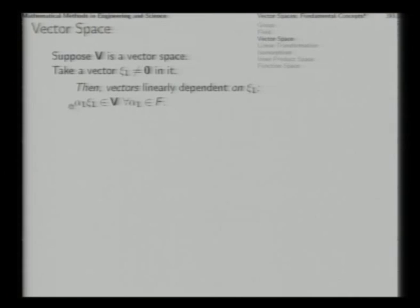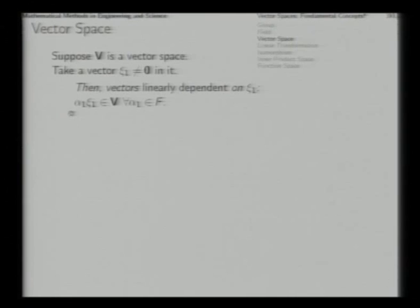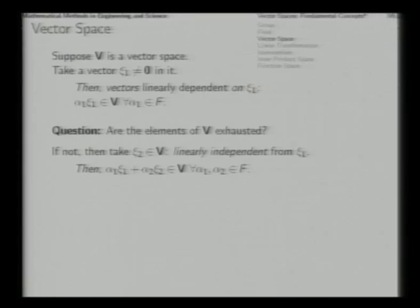With this vector ξ₁ picked from the vector space, we get a lot of scalar multiples: take a scalar α₁ and for all such α₁ from the underlying field F we can get several other vectors α₁·ξ₁. All such vectors are in V. These vectors which can be generated from ξ₁ through scalar multiples α₁ are said to be linearly dependent on ξ₁. After we exhaust all these vectors, we ask: are all elements of V exhausted? If not, we take another vector ξ₂ in V which cannot be expressed as a scalar multiple of ξ₁ — so ξ₂ is linearly independent of ξ₁.